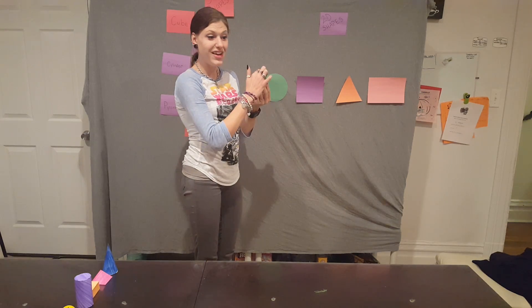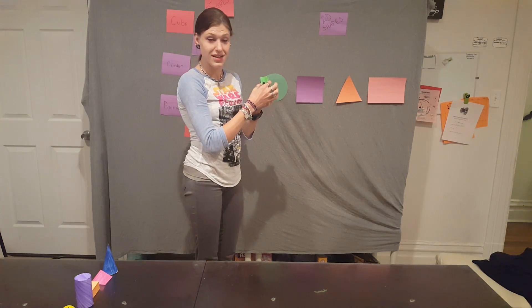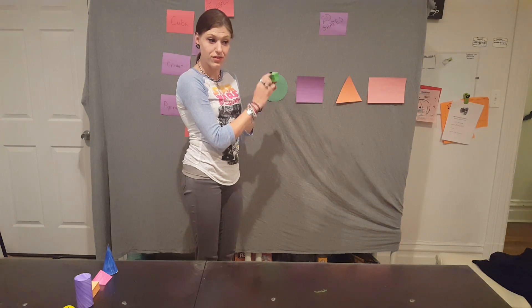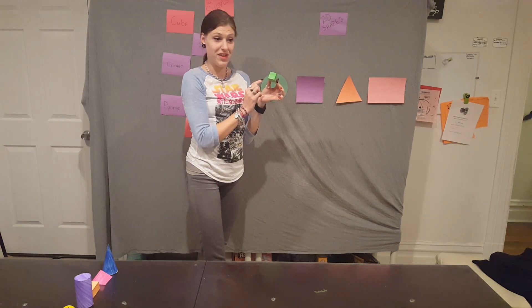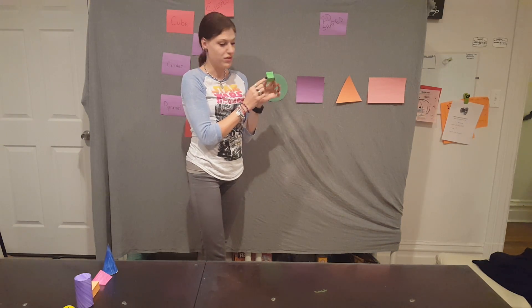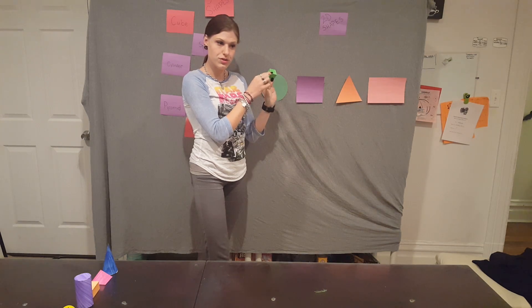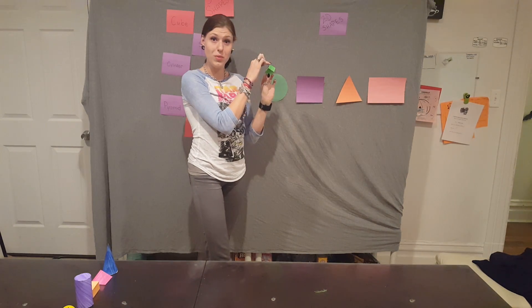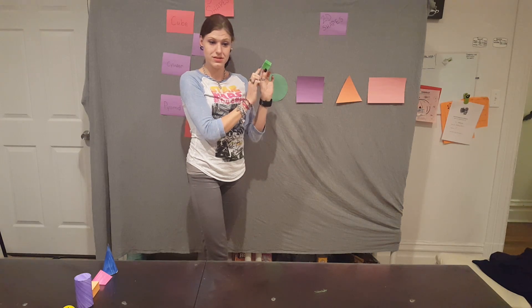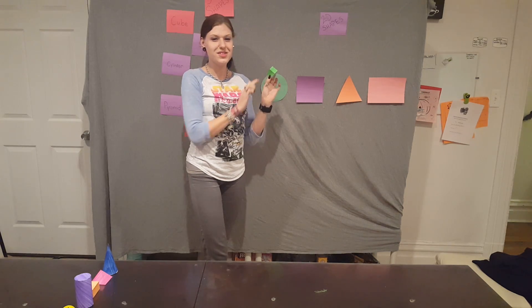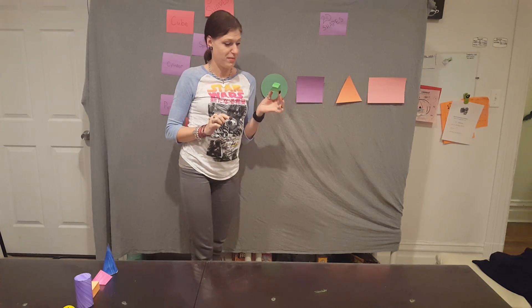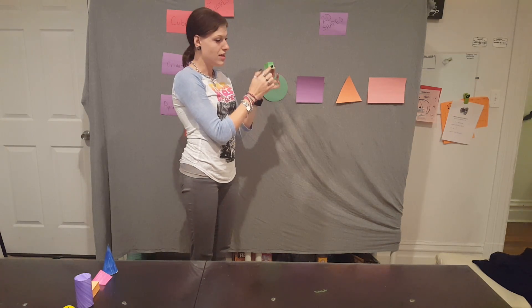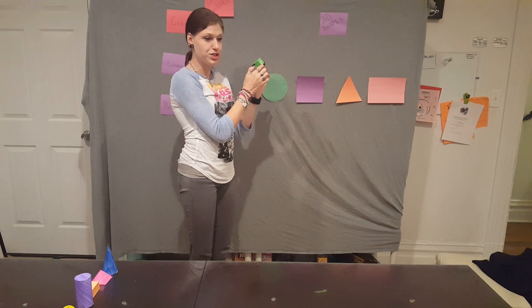six faces. This is what we call a face. Where the faces meet is what we call an edge. And where the edges meet are what we call vertices.